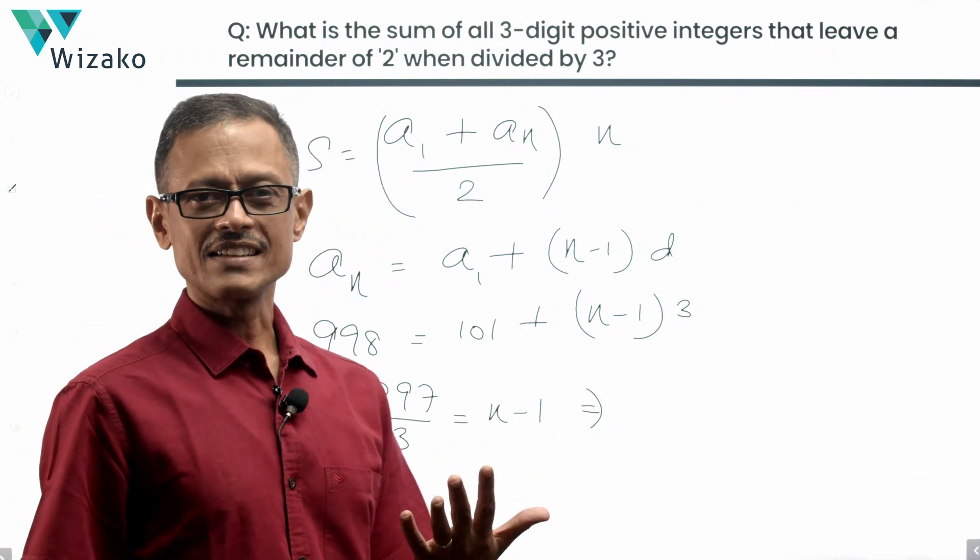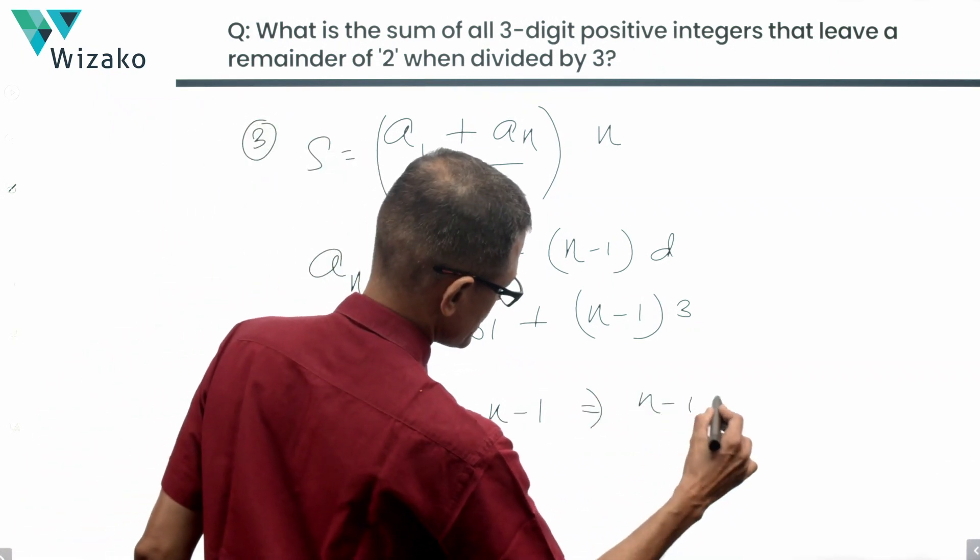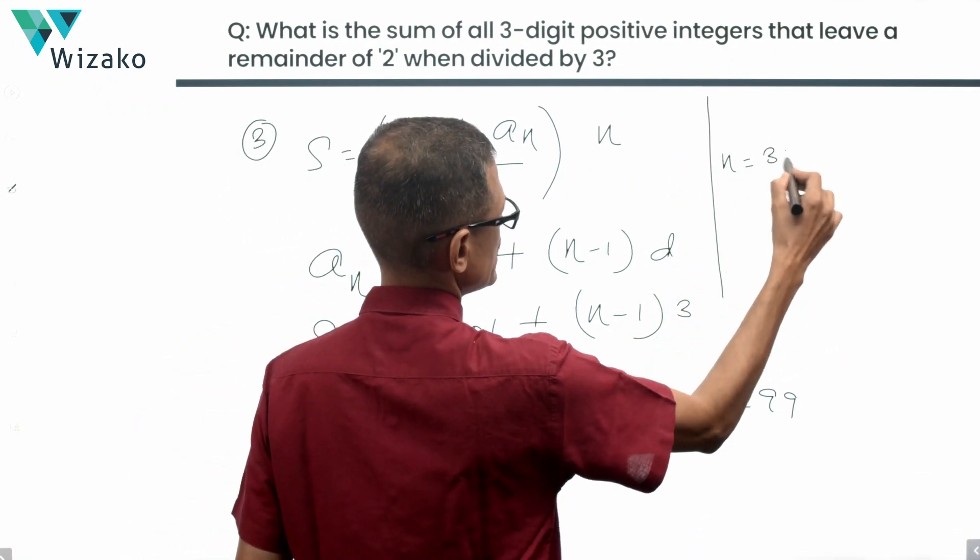900 by 3 is 300. 897 by 3 therefore is 299. n minus 1 is equal to 299. So n is equal to 300.